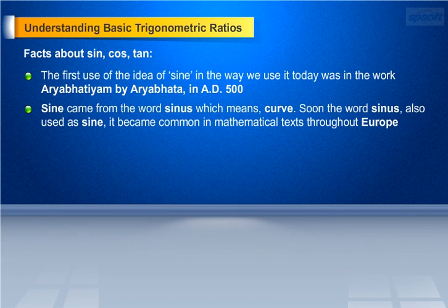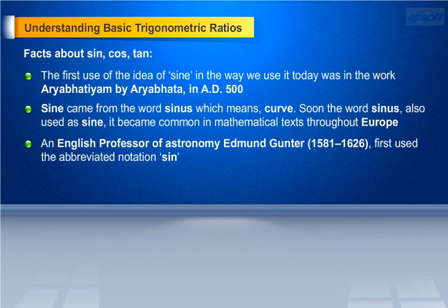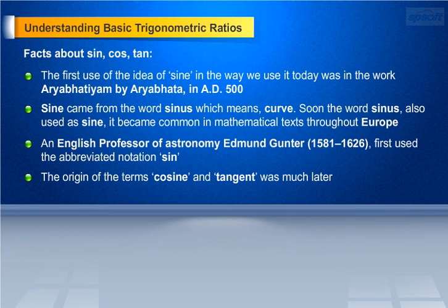Sine came from the word Sinus, which means curve. Soon the word Sinus, also used as sine, became common in mathematical texts throughout Europe. An English professor of astronomy, Edmund Gunther (1581–1626), first used the abbreviated notation sin. The origin of the terms cos and tangent was much later.